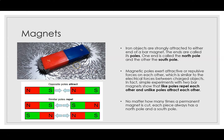This is similar to the electric force between charged objects. For example, positive and positive charges repel each other, but negative and positive charges attract each other. It is the same with magnets — like poles repel each other and unlike poles attract each other.